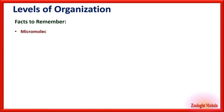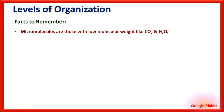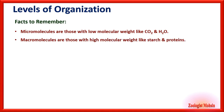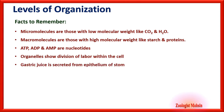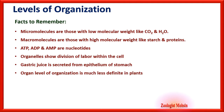Micro molecules have low molecular weight, like carbon dioxide. Macro molecules have high molecular weight, like starch and proteins. ATP, ADP, and AMP are nucleotides — remember this fact. Organelles show division of labor within the cell. Gastric juice is secreted from the epithelium of the stomach.